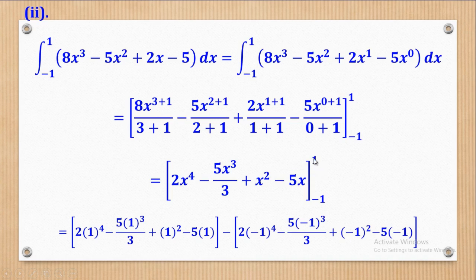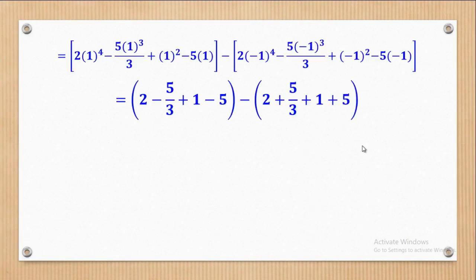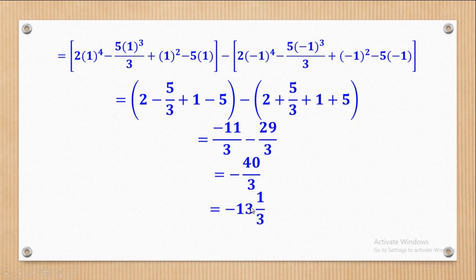Next, substitute the upper limit — where there is x put the upper limit 1 — to give the first bracket, and minus the lower limit negative 1 to give the second bracket. Using the calculator, simplify the first bracket to get negative 11 over 3, and the second bracket to get 29 over 3. In the end you get negative 40 over 3, which can be reduced to negative 13 and a third. That is the result for the integral in Roman 2.